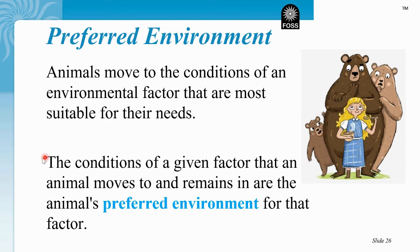The conditions of a given factor that an animal moves to and remains in are the animal's preferred environment for that factor. The factor that we tested was moisture. Just like Goldilocks — if you remember reading about Goldilocks — how she didn't like a bed that was too hard, didn't like a bed that was too soft, liked one that was just right. So I like to think of an animal's preferred environment like Goldilocks: finding the condition that is most suitable for their needs. That's their preferred environment — what's just right.